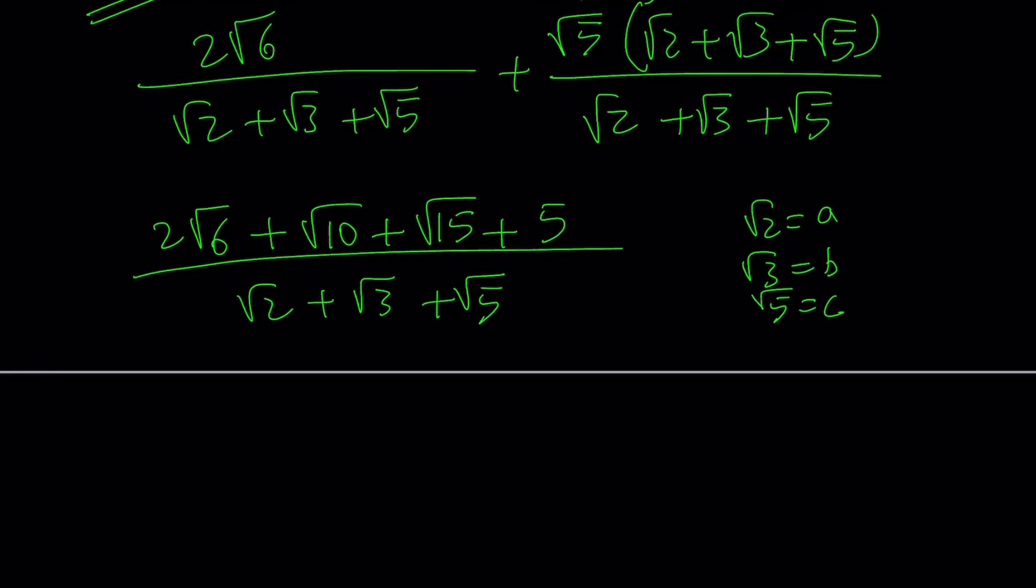I'm going to break down the numerator. So 2 root 6, I'm going to write it as root 6 plus root 6. Root 10, I'm going to break it down, but let me go ahead and write it out first. Root 15 and 5, I'm going to break it down into 3 plus 2.